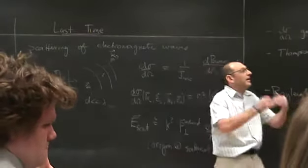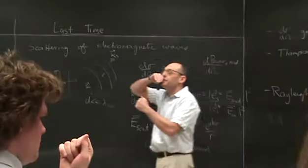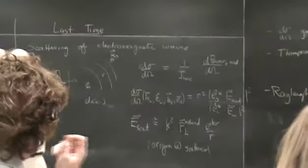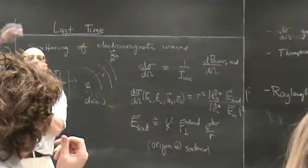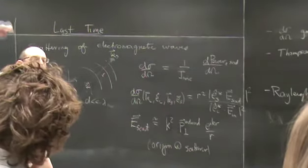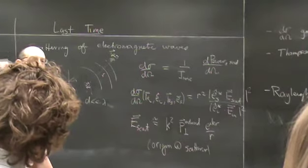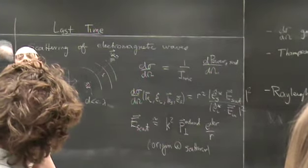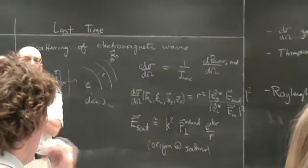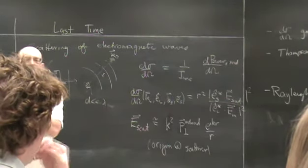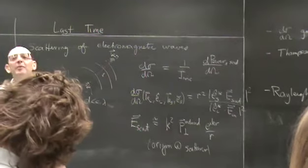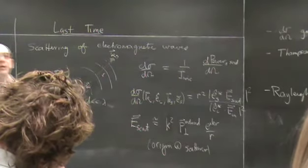In atomic or molecular spectroscopy, if you have a quantization axis and the polarization of the light is parallel to the quantization axis, we call it pi polarization. If it's perpendicular to the quantization axis, we call it sigma plus or sigma minus.